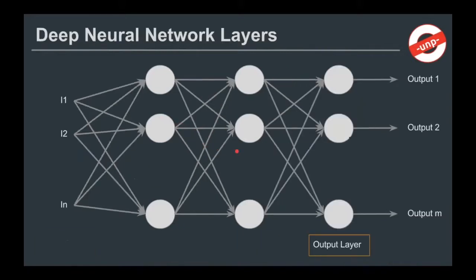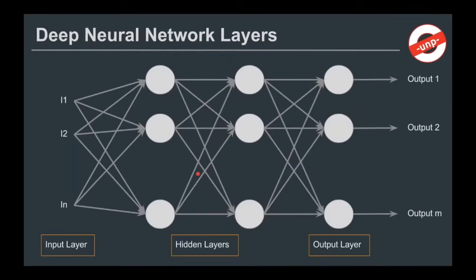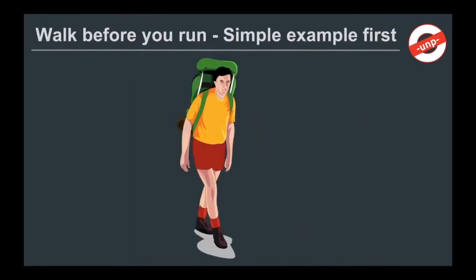This combination of neurons put through allows me to have more hidden layers. I can have the input layer, the output layer, and more hidden layers. The more hidden layers, the deeper the network. Enough theory — before we start running with the neural network example, we'll learn how to walk first. Simple example first.